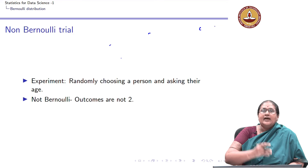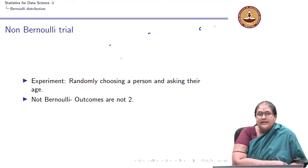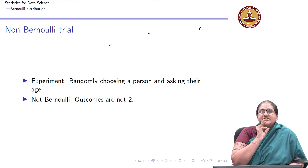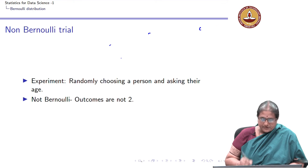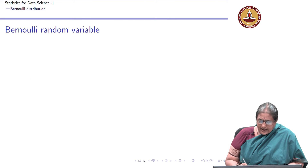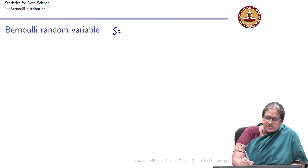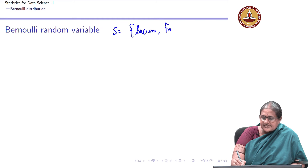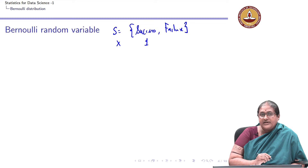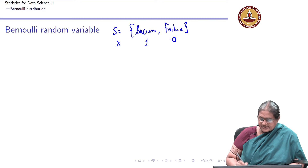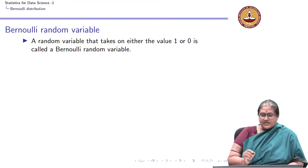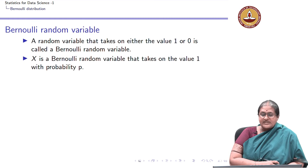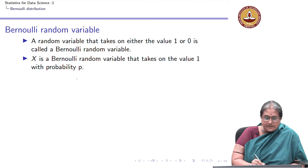In summary, a Bernoulli trial is an experiment or trial which has two outcomes. When I have a sample space with two outcomes defined as success and failure, I define the random variable X to take the value 1 if it is a success and 0 if it is a failure. This is what we refer to as a Bernoulli random variable.